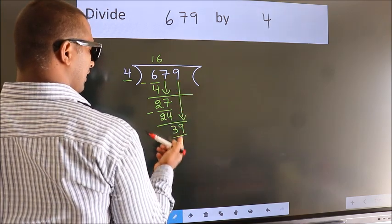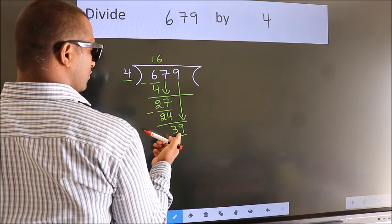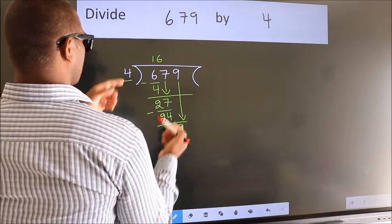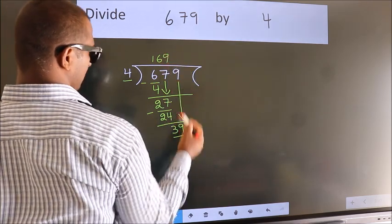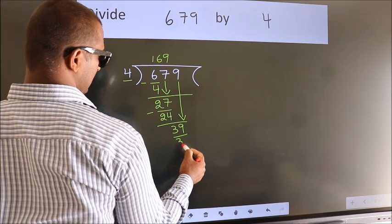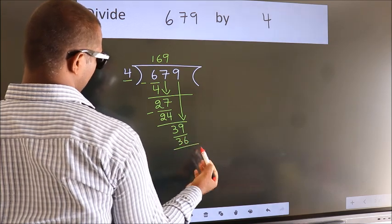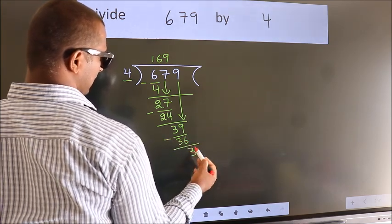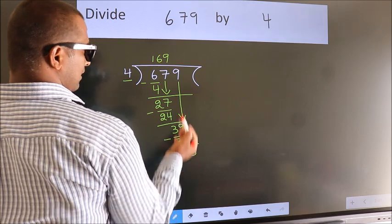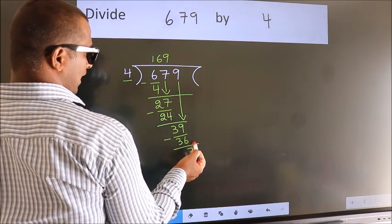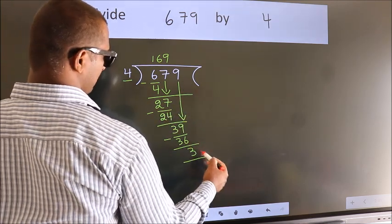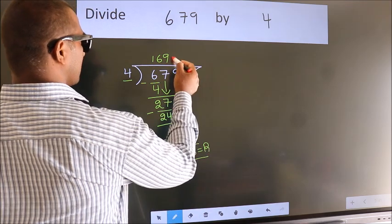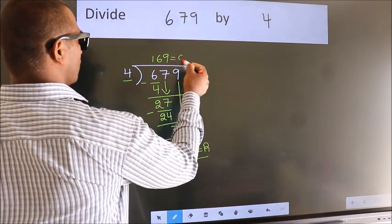So 39. A number close to 39 in the 4 times table is 4 nines, which is 36. Now we subtract — we get 3. No more numbers to bring down, so we stop here. This 3 is our remainder, and this is our quotient.